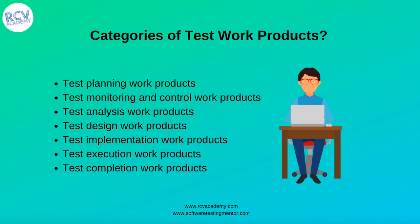The seven categories are: test planning work products, monitoring and control work products, analysis work products, design work products, implementation work products, test execution work products, and test completion work products. Let's see one by one what all important work products are produced as part of each of these phases.